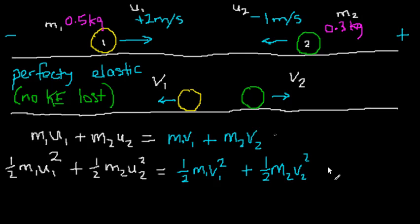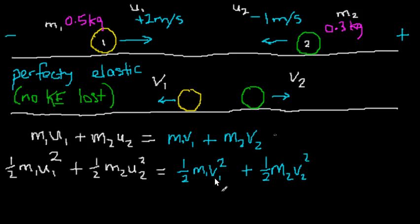I'll explain that in another video. For now, we note that because v1 is squared in the kinetic energy equation, it's not a simple simultaneous equation — those squares make things a little bit complicated. But with some algebra it is possible to rearrange these two equations into a simpler form.